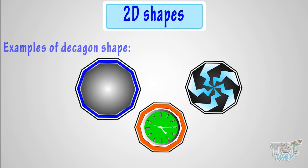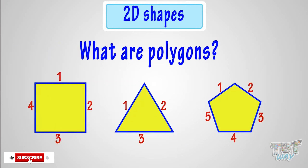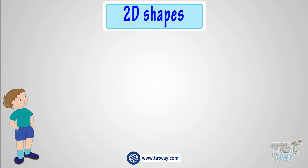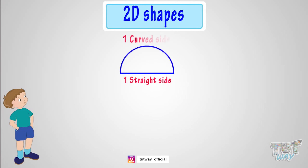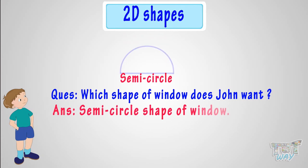So kids, today we learned what polygons are and various 2D shapes and their basic characteristics. Now let's answer a few questions. John wants to have a window in his room that has one straight side and one curved side. Which shape of window does John want? John wants a semicircle shape of window.